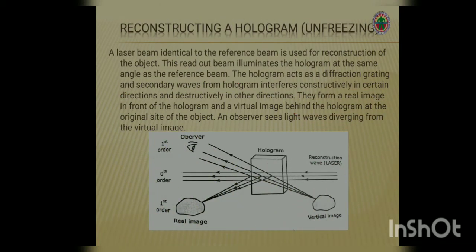Reconstructing a hologram. A laser beam identical to the reference beam is used for reconstruction of the object. This readout beam illuminates the hologram at the same angle as the reference beam. The hologram acts as a diffracting grating, and secondary waves from the hologram interfere constructively in certain directions and destructively in other directions. They form a real image in front of the hologram and a virtual image behind the hologram at the original site of the object. Observers see light waves diverging from the virtual image.